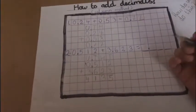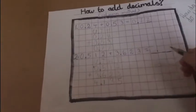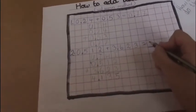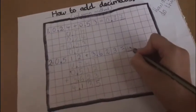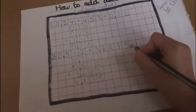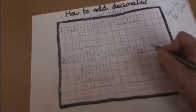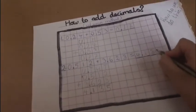3 plus 0 is 3, and 3 plus 1 is 4. And that's your answer. Wait, there's the decimal point. I forgot. So like that: 4.135.